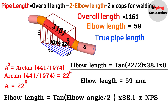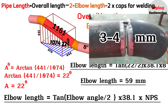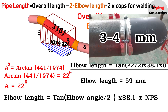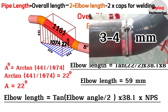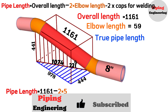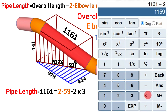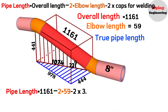During fit-up, a small gap is required for welding — approximately 3 to 4 mm. This gap is necessary for a good root weld. Now let's find the true pipe length by substituting our overall length, elbow lengths, and welding gap into the formula. Pipe length equals overall length 1161, minus 2 times elbow length 59, minus 2 times 3 for the welding caps. So 1161 minus 118 minus 6 equals 1037 mm. The red-colored pipe length between the two elbows is 1037 millimeters.